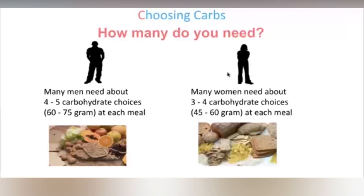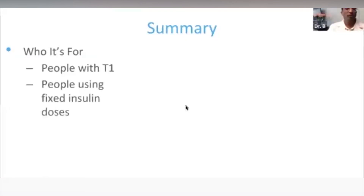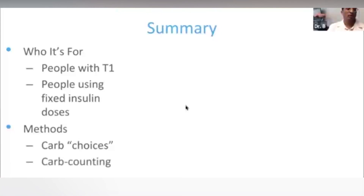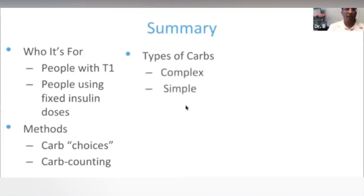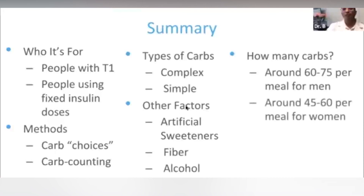Let's summarize what we talked about today. Who should count carbs: people with type 1, people using mealtime insulin, and anyone else who wants to follow a healthy diet. Remember carb choices versus grams of carbs — 15 is the number. Think of complex versus simple carbohydrates and favor complex. Artificial sweeteners don't affect sugars. For fiber, subtract if there are five or more grams in a serving. Be careful with alcohol. And for carb amounts: four to five choices for men (60 to 75 grams) and three to four for women (45 to 60 grams).